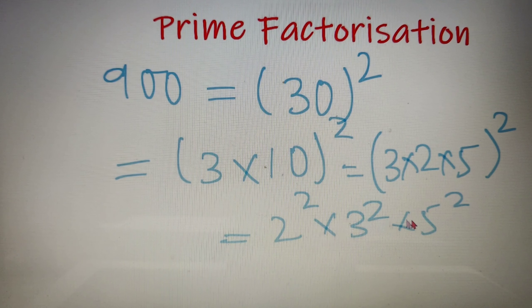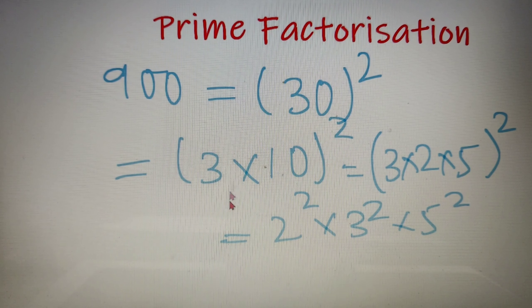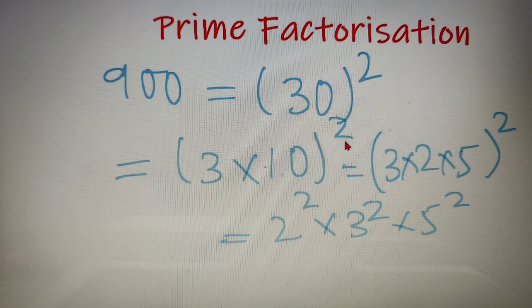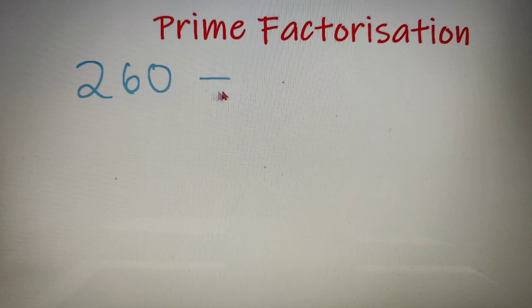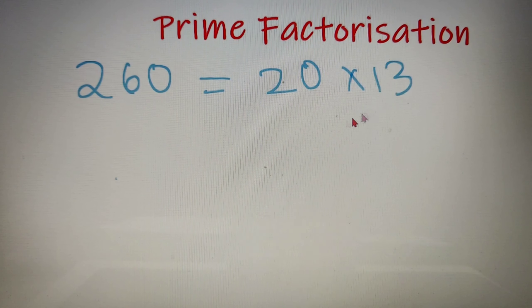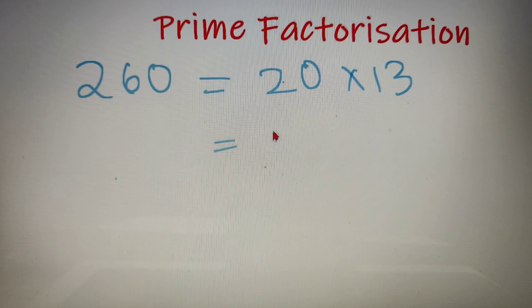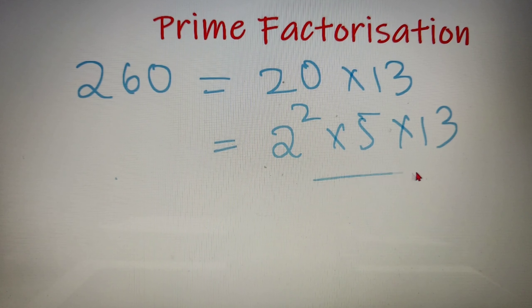This method is very useful during competitive exams because you don't have the time to use the long division method, and with practice you can do it mentally. For example, suppose we have to prime factorize 260. I know 260 is equal to 20 into 13. Now 20 is equal to 2 into 10, and 10 is equal to 2 into 5, so the answer is 2 squared into 5 into 13.